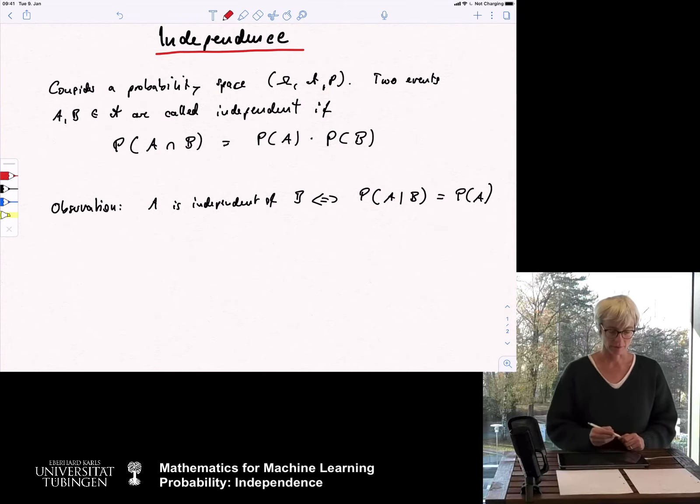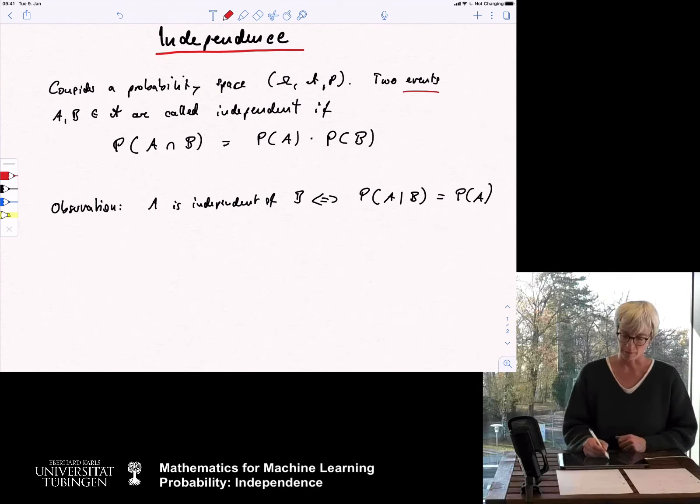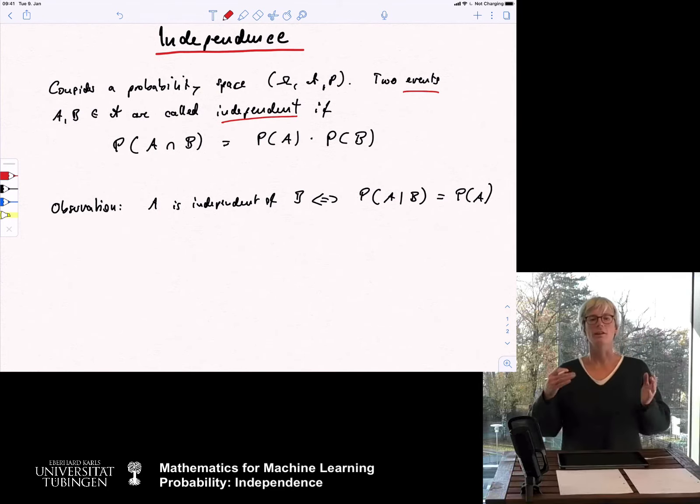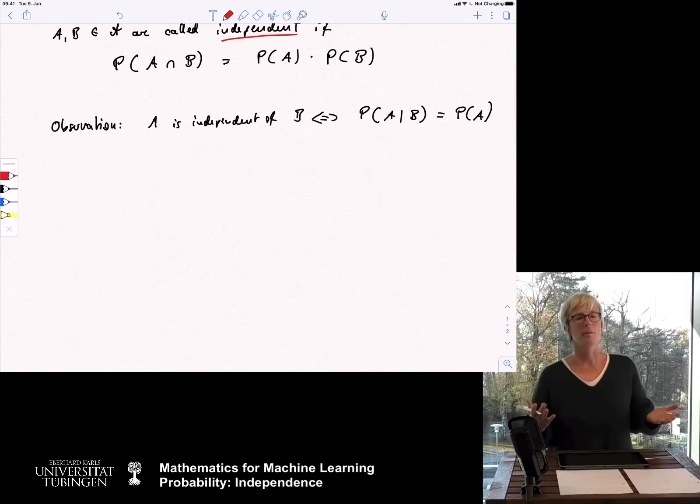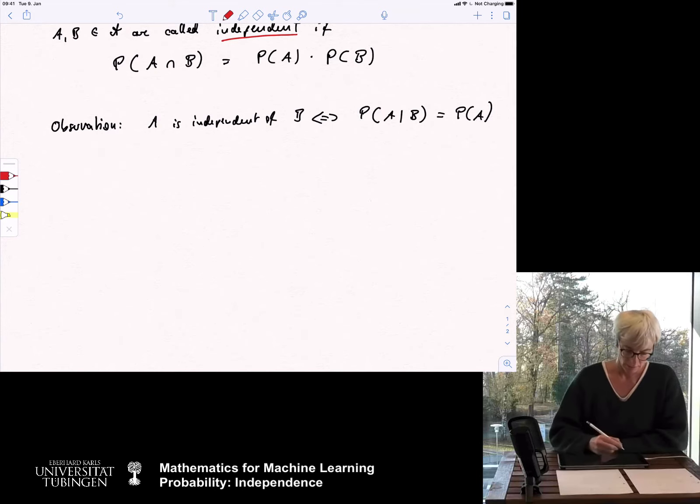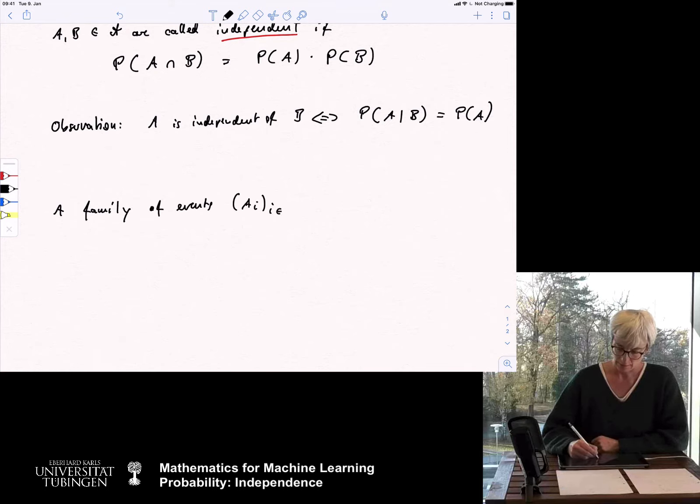Now, so far we have defined whether two events are independent. And in the long run, we want to define what does it mean for two random variables to be independent. But for this, we need one more intermediate step. We need to say, when is a family of events independent? So we say, in black, a family of events A_i, i in some index set I, is called independent.